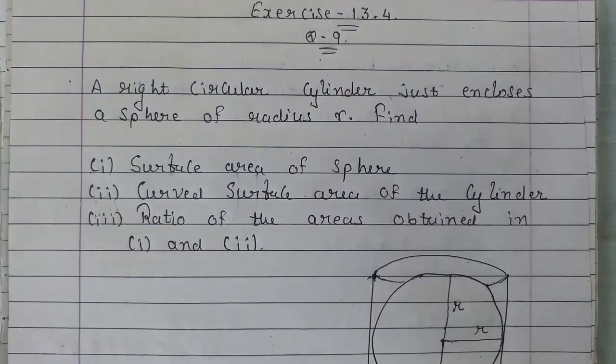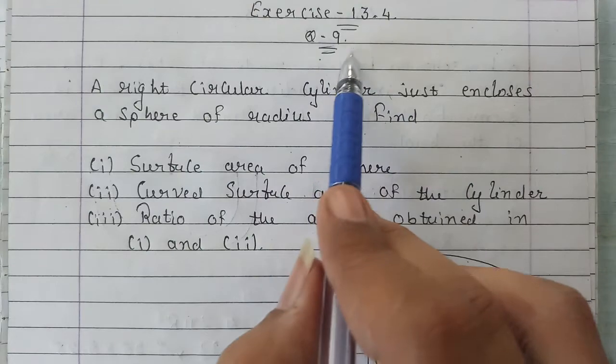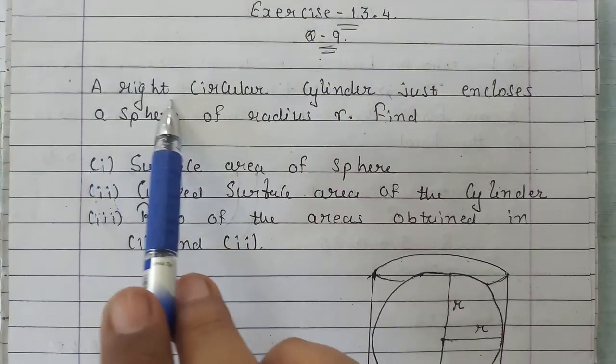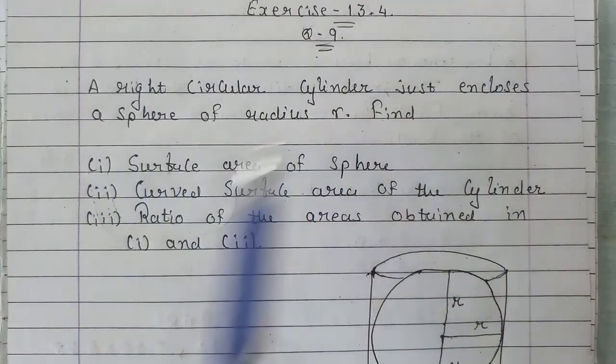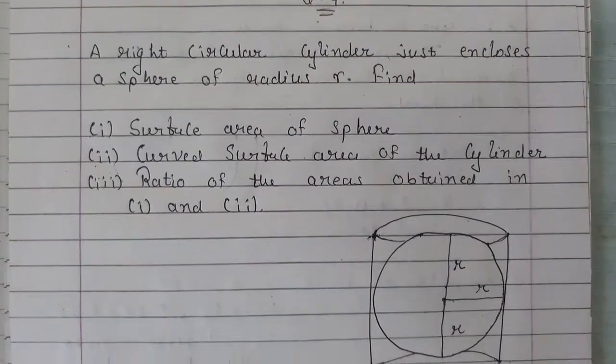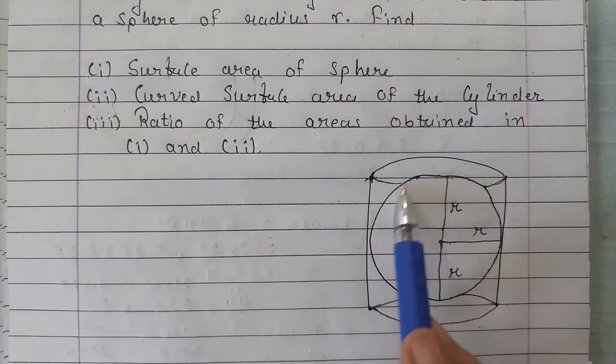Next we are going to continue with Exercise 13.4, Question Number 9. A right circular cylinder just encloses a sphere of radius r. See, what we have given is we have given a sphere.